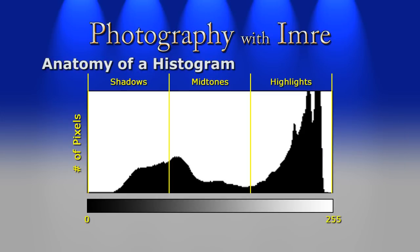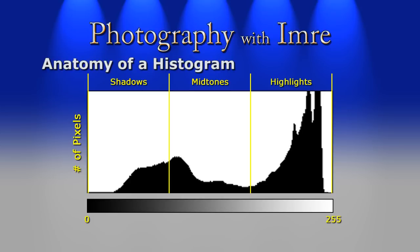Here I've subdivided the histogram into thirds, which roughly shows where the shadow, midtones, and highlight portions of the image are represented. Going back to the example photo, you can see that there aren't a lot of pixels that fall into the shadow or midtone areas. Most are well within the highlight zone.